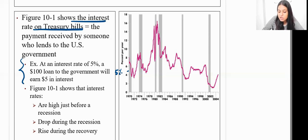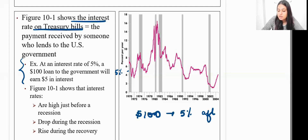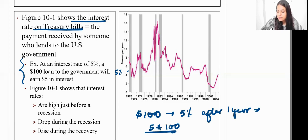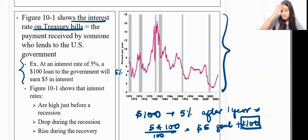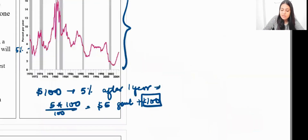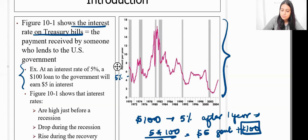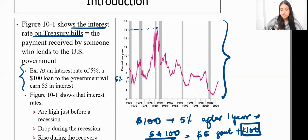Let's understand this: suppose you give a loan of one hundred dollars to the government at an interest rate of five percent. After one year you will get five dollars from the government, and you'll also get back those hundred dollars. Looking at this figure, we understand that treasury bill interest rates have touched very high levels — approximately 16 percent — and have dipped to very low levels of around 2.5 to 3 percent, even lower in recent times.